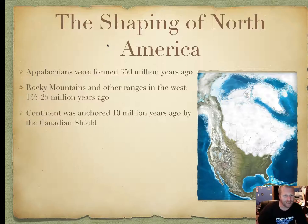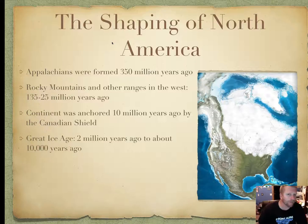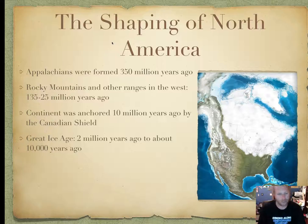The continent was anchored 10 million years ago by the Canadian Shield, which kind of stopped it from moving as much, around Hudson Bay. Then we have the Great Ice Age, 2 million years ago to about 10,000 years ago, and there were a lot of woolly mammoths and other species.